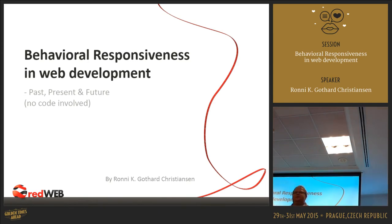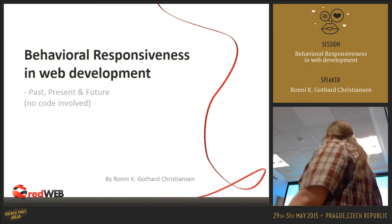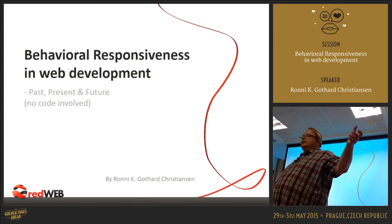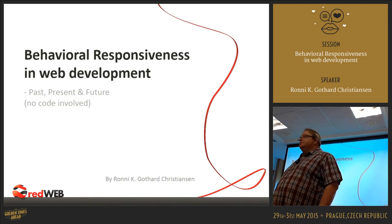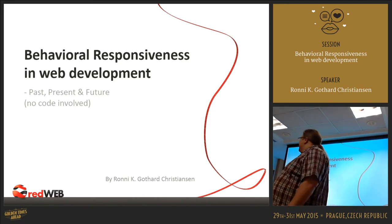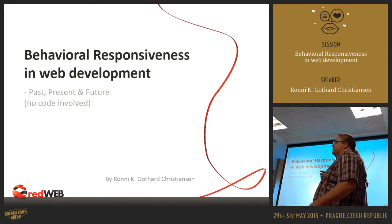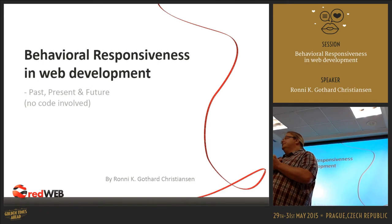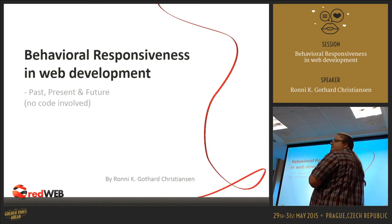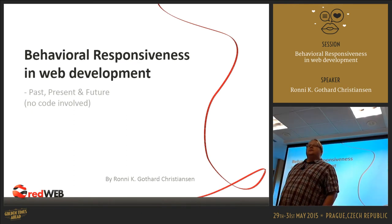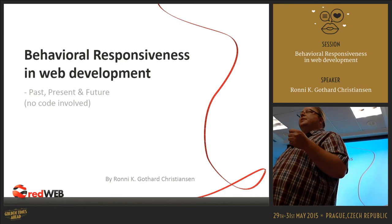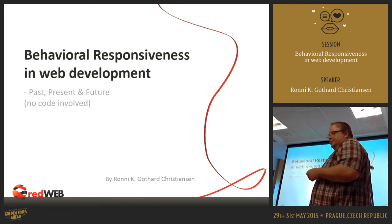The subject today is behavioral responsiveness in web development: past, present, and future. We need to look a little back in history. What is behavioral responsiveness? What is behavior and responsiveness? We're also looking at what's going on right now, including some machine learning and predictions. Then we'll try to look ahead and see how we can work with these concepts in the future and what the World Wide Web will look like in the next three to five years. The internet as we know it today is gone in five years.